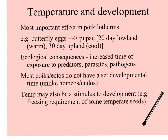This effect of temperature on development is most evident in poikilotherms. For example, the butterfly eggs mentioned in the first lecture: the caterpillars feed through their different developmental stages and eventually pupate, becoming a chrysalis. It takes about 20 days in the lowlands where it's warmer, and 30 days in uplands where it's cool. This may be a simple metabolic difference, but there are ecological consequences — taking longer to develop in cool uplands means caterpillars spend longer time exposed to predators, parasites, and pathogens.